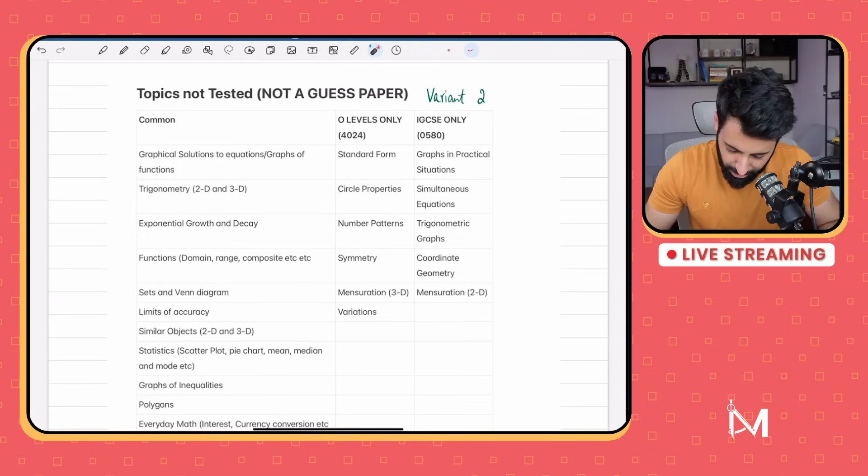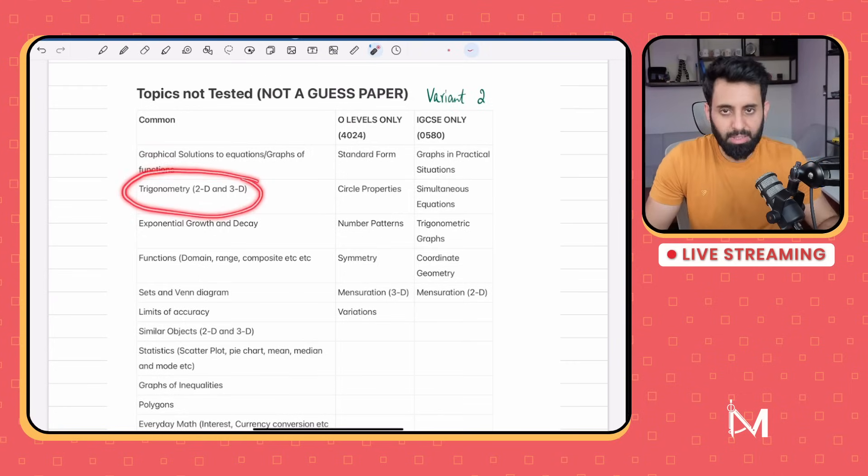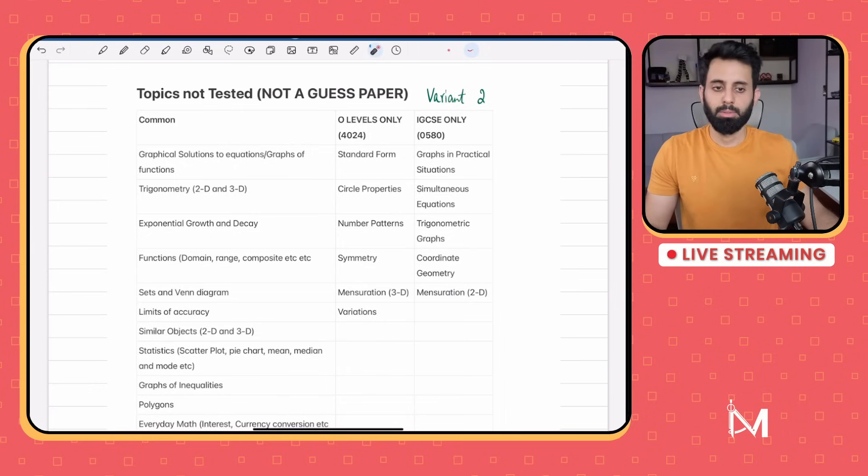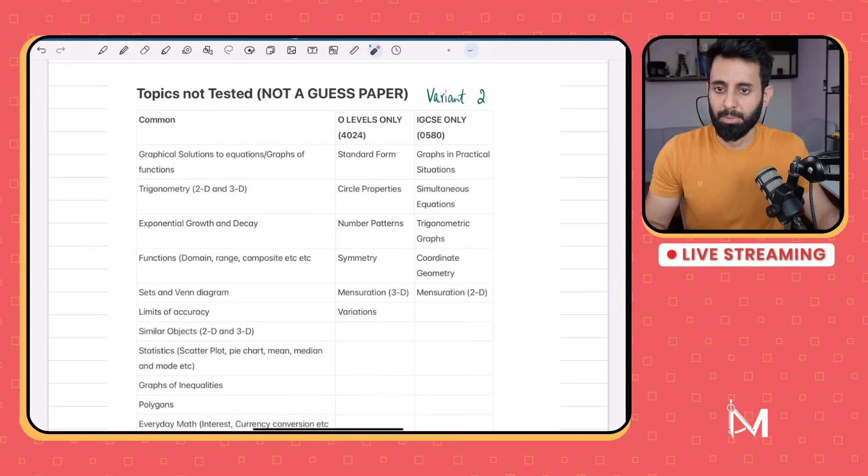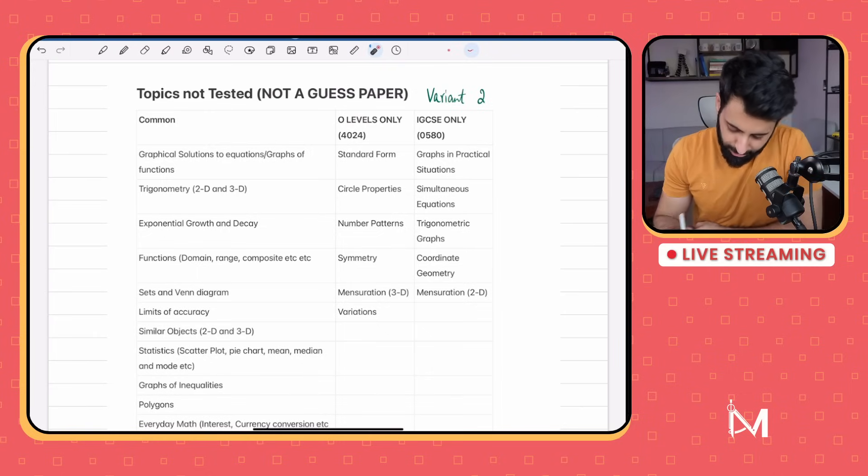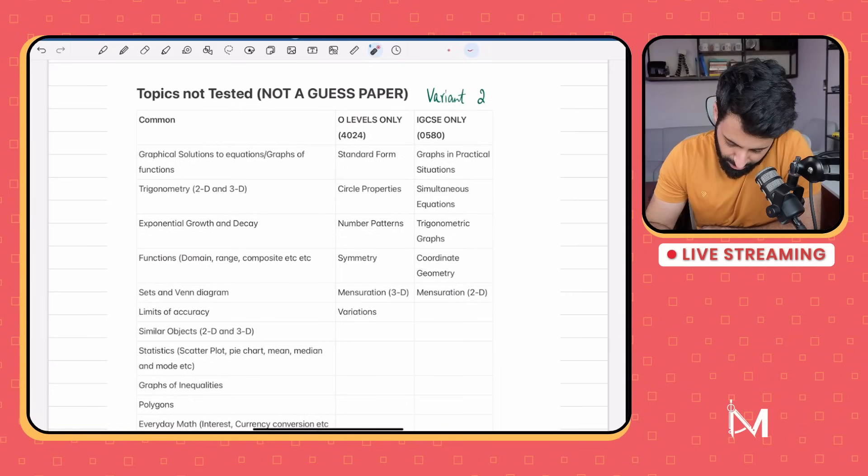Then trigonometry - trigonometry mainly is a topic which is tested in the calculator paper, so you can expect that in the coming paper, which is paper four of IGCSE and paper two of O-levels. Then exponential growth and decay, not tested. Once again, for this you need a calculator, so you can expect this in paper two and paper four of O-levels and IGCSE respectively.